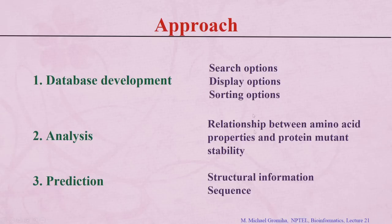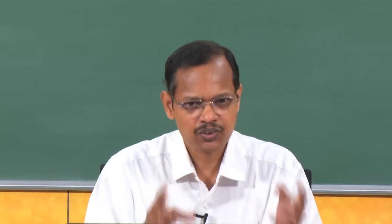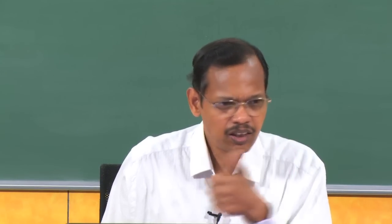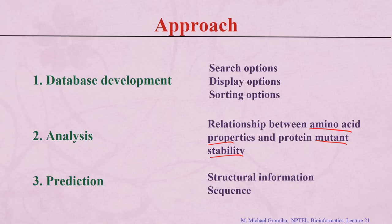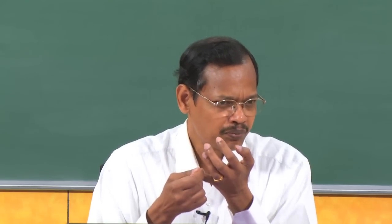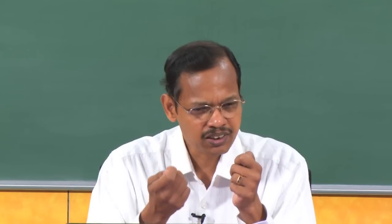We can investigate relationships between amino acid properties and stability upon mutation — any specific properties that can influence stability. Once we relate properties and stability, it is possible to develop models to predict stability upon mutation for unknown data. These three aspects are: first, developing a database with search options and download capability; second, analyzing the data to understand important factors for stability; and third, developing models for prediction. This approach can be applied to stability, binding affinity of protein-protein interactions, and protein-DNA interactions.